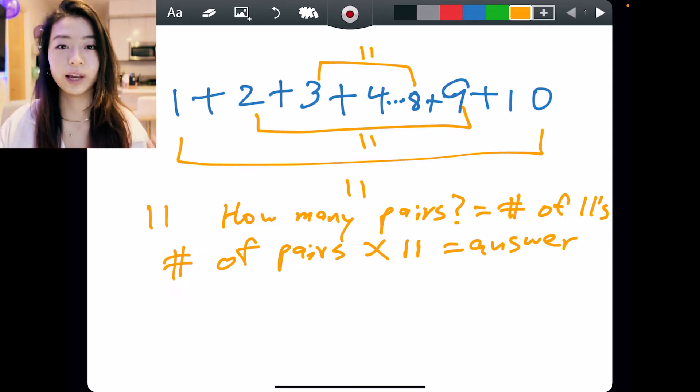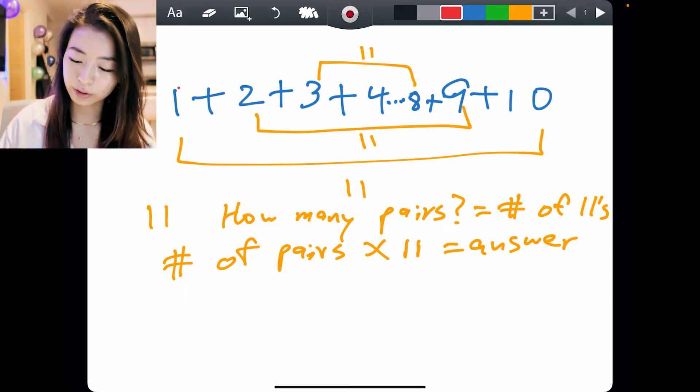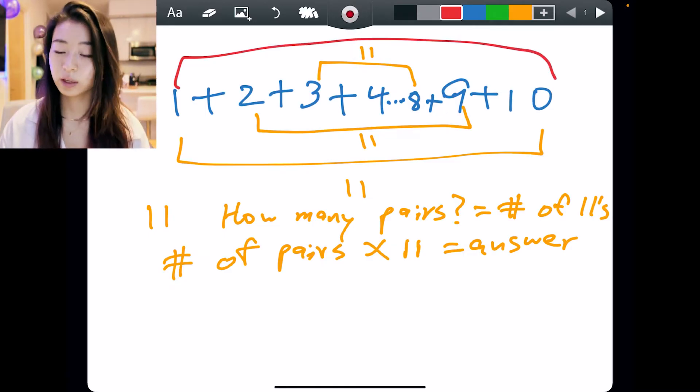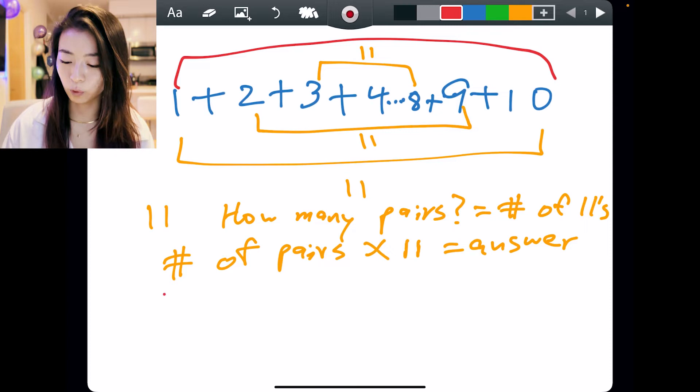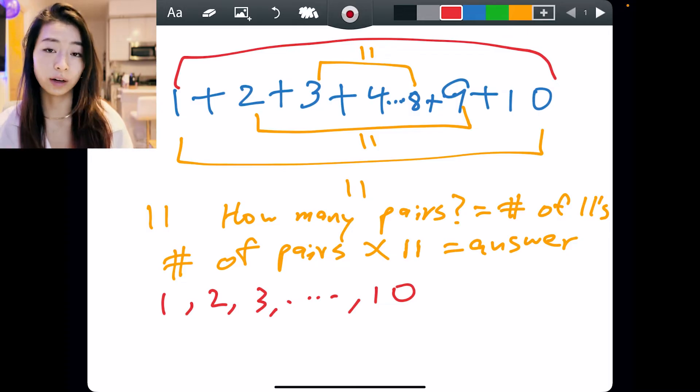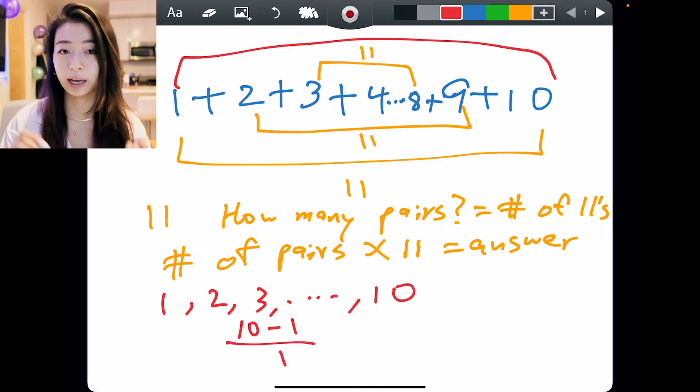Well, the number of pairs is just going to be the number of numbers divided by 2. So how many numbers are there from 1 all the way to 10? In last time's video, we found that the formula was the last number minus the first number divided by the increment at which we count.